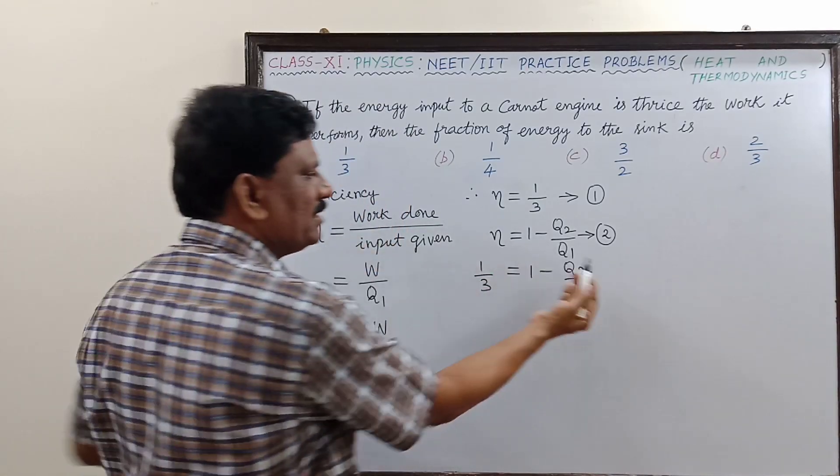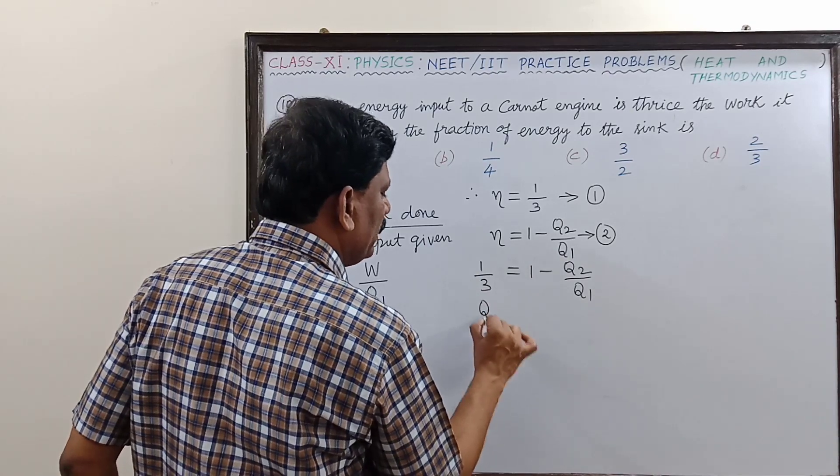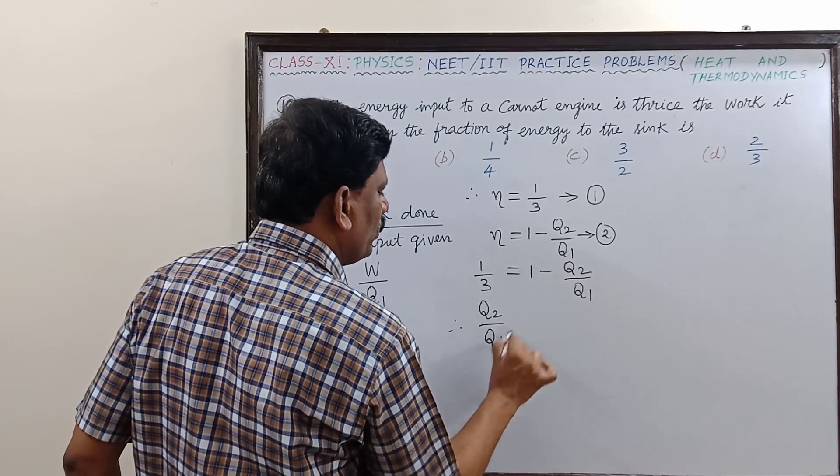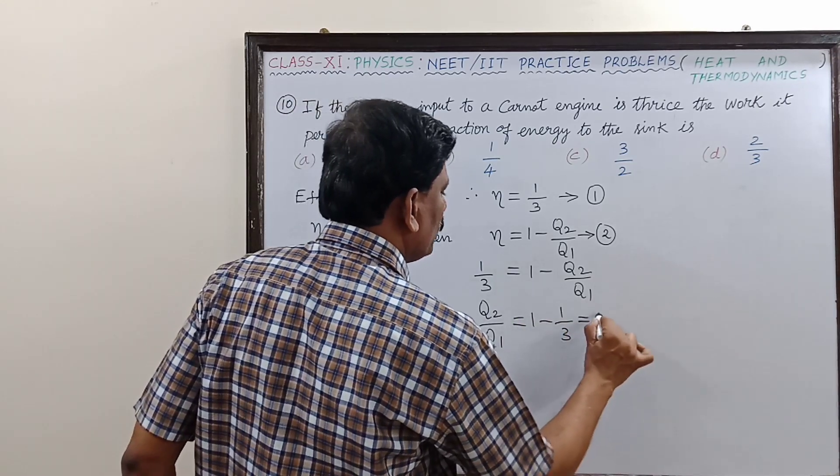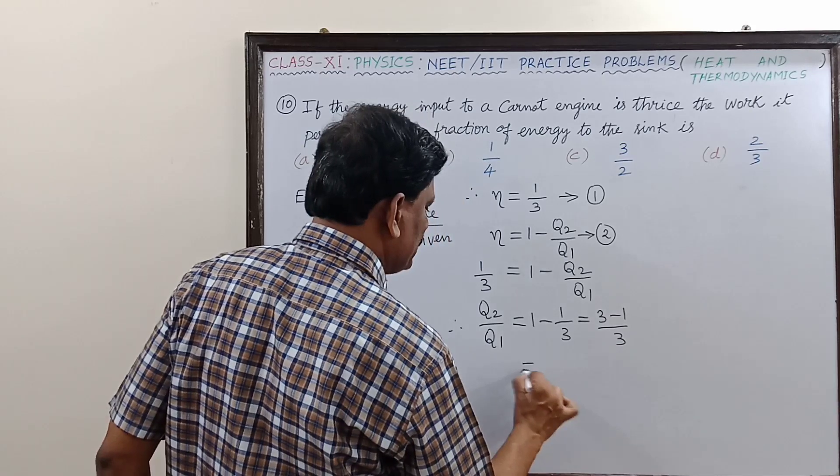I will interchange this minus Q2 by Q1 to the left hand side, therefore Q2 by Q1 will be equal to 1 minus 1 by 3, so this is equal to 3 minus 1 divided by 3, which is equal to 2 by 3.